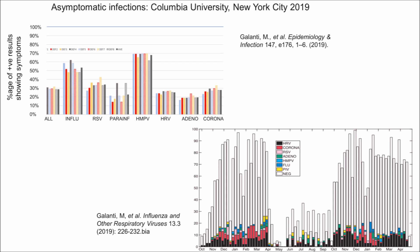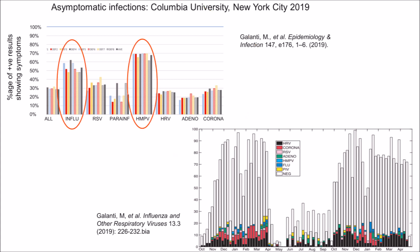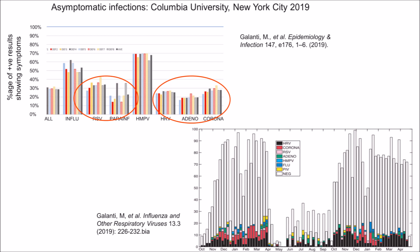Now I come to very important new data published in 2019 by a group at Columbia University in New York City. First, they found that respiratory viruses are very often present without causing symptoms. Influenza and human metapneumovirus were asymptomatic in 30-50% of individuals carrying them, but the other viruses were asymptomatic in two-thirds to three-quarters of cases. Secondly, they showed that as many people were carrying the virus in summer as in winter. This means we should focus not on transmission rates, but on mechanisms that can cause viruses already present to become more active.